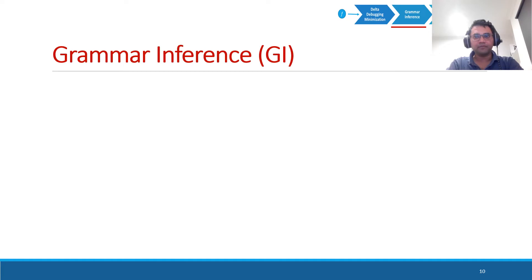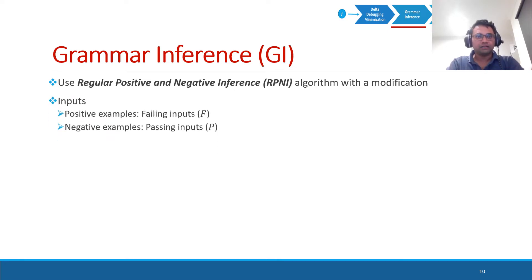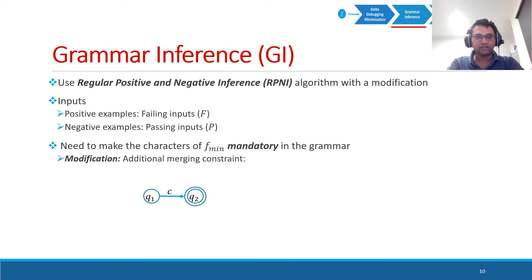In the next step, which is grammar inference, we apply RPNI or Regular Positive and Negative Inference algorithm with a modification. We use the test inputs obtained in delta debugging minimization. The positive examples are the failing inputs as we need a grammar for the failing inputs, and the negative examples are the passing inputs. Our modification is to make the characters of the minimal failing input mandatory in the grammar. To introduce an additional merging constraint, I would like to explain that.